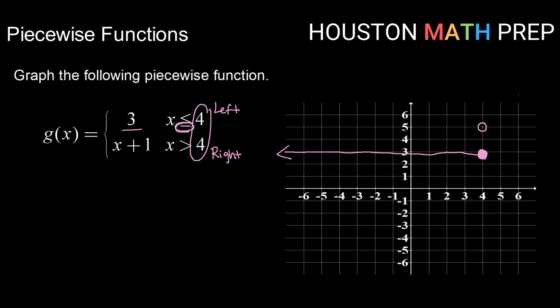And then I'm going to continue the graph to the right using the definition x plus one. Well this is a line that has a slope of one. So from this point four five I can go rise one, run one. There's another point. Rise one, run one.